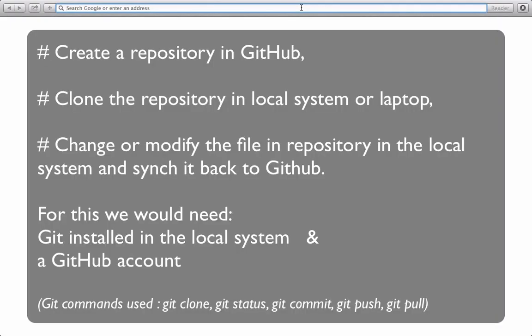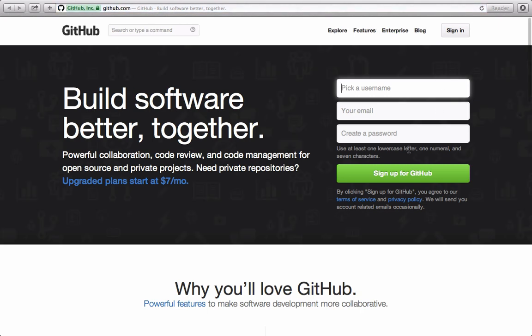In this video we will see how to create a repository in GitHub, how to clone the repository in the local system or laptop, how to make changes to the files in the repository in the local system, and sync those files back to the GitHub repository. For this we would need Git installed in the system and also a GitHub account. Make sure that you have Git installed as well as a GitHub account. If you don't have a GitHub account, you can go to the GitHub site and sign up.